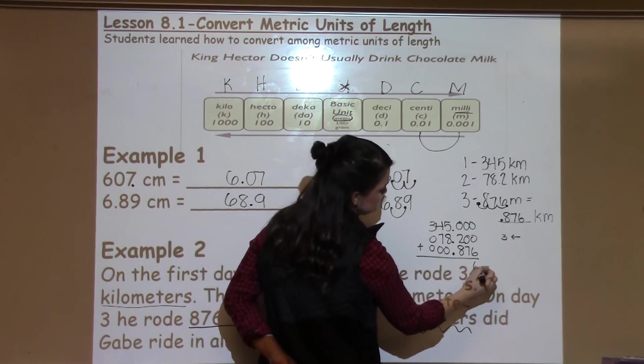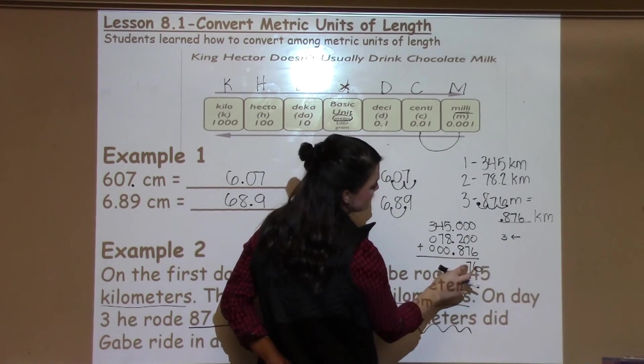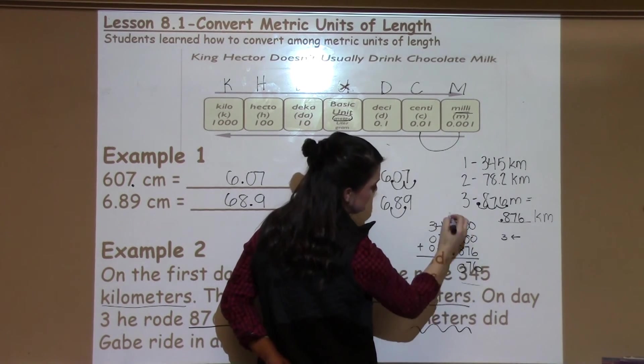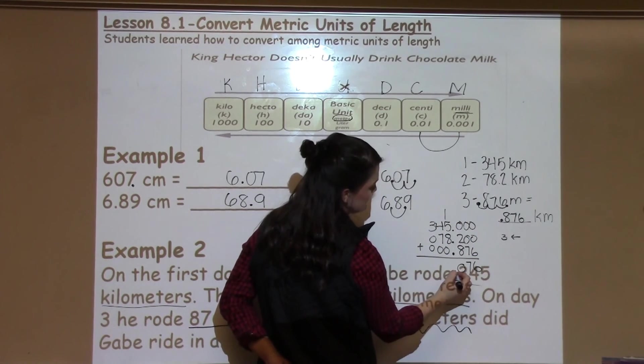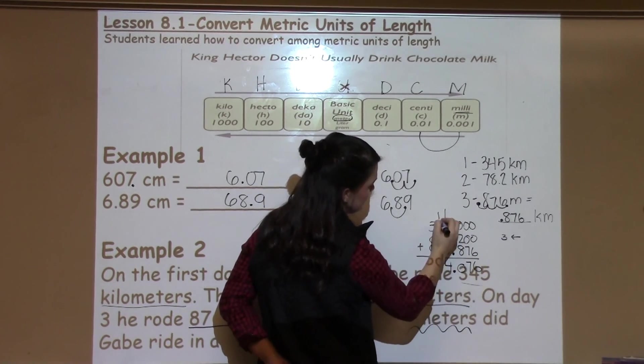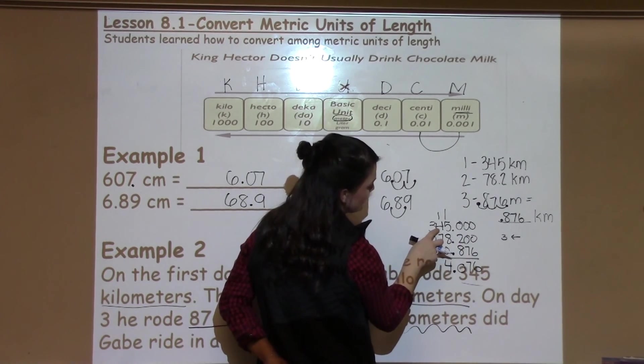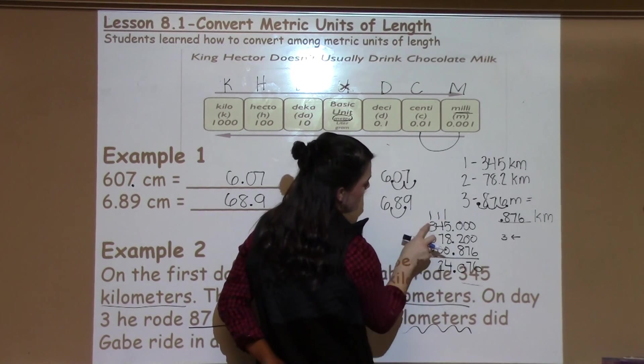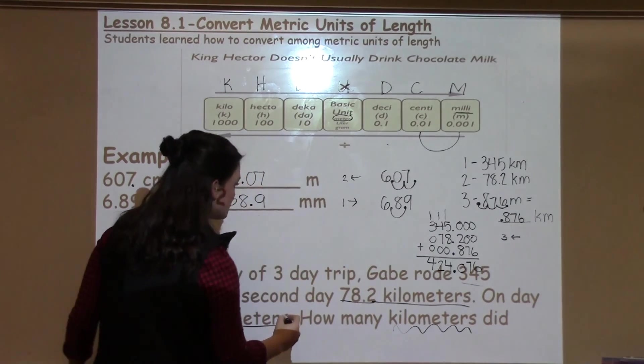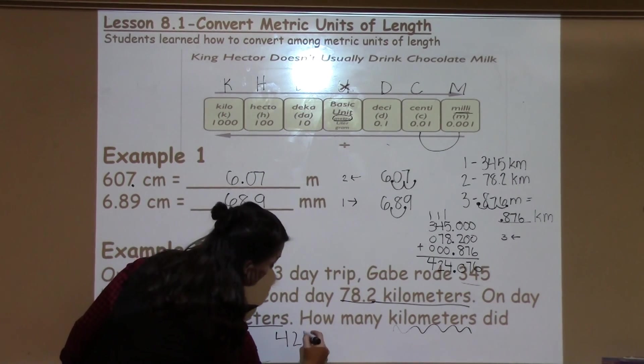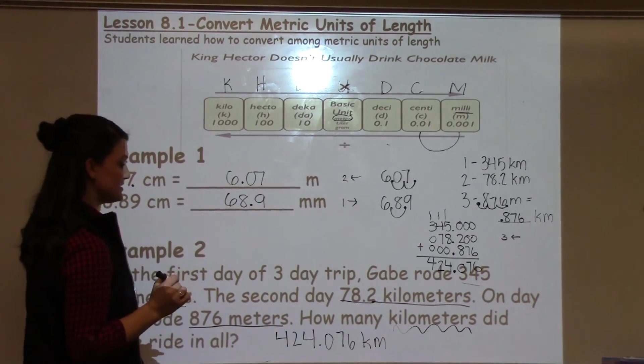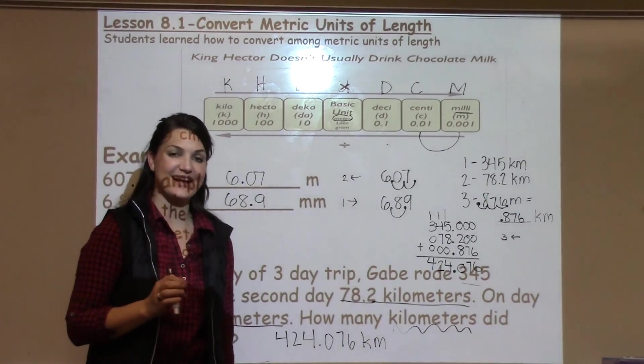So zero plus zero plus six is six, zero plus zero plus seven is seven, zero plus two plus eight is ten, carry the one, bring down the decimal point. Eight plus five is thirteen, plus one is fourteen, carry the one. Seven plus four is eleven, plus one is twelve, carry the one. Three plus one is four, for a final answer of 424.076 kilometers, which is a lot to take on a ride.